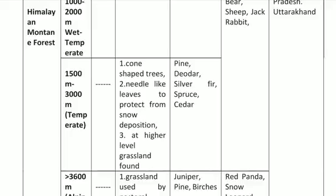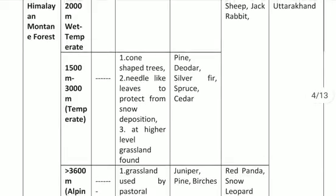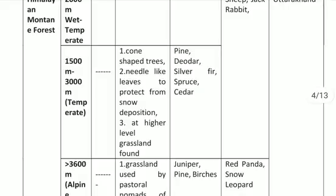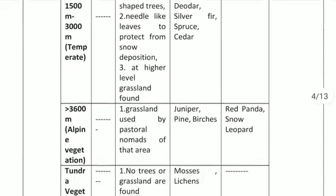The second type of Himalayan Mountain Forest is found at a height of 1500 to 3000 meters. Its main characteristics include short trees with conical, triangular, needle-like leaves that protect from snow. At higher elevations, grasslands are also found. Main trees in this type include pine, deodar, silver fir, and cypress.